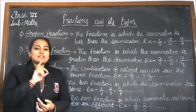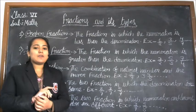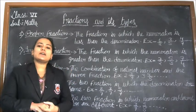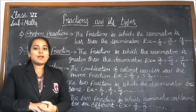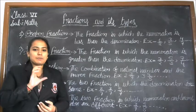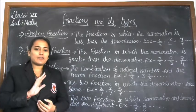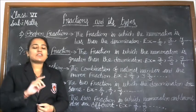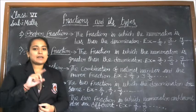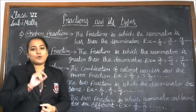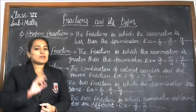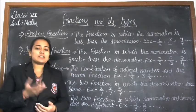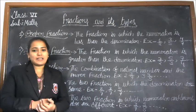A fraction is a number which has both a numerator and a denominator. A single number alone is not a fraction — it must have both a numerator and a denominator to be known as a fraction. Fractions are of many types.